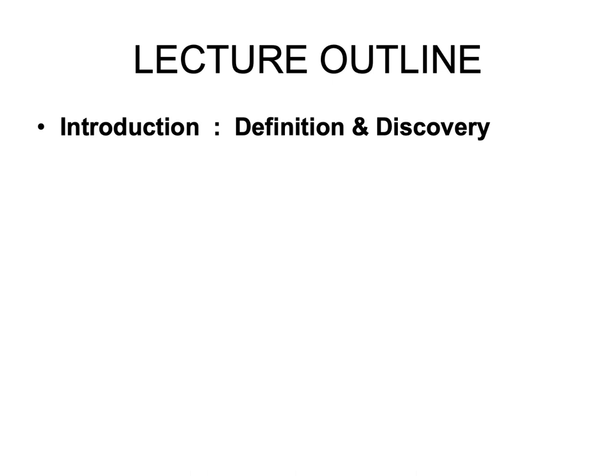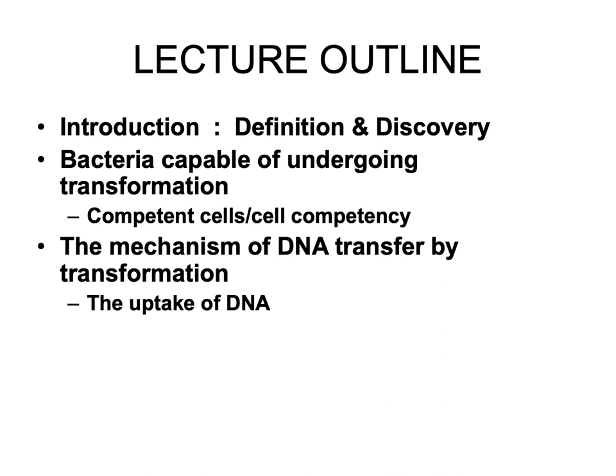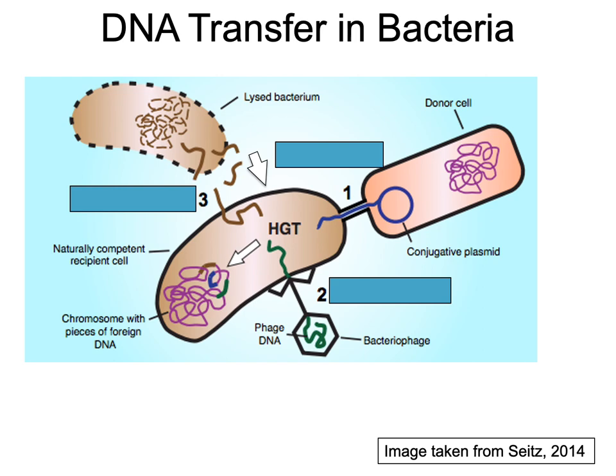This lecture will be divided into five subtopics. The first one is introduction and the elegant experiment which led to the discovery of transformation process in bacteria. Next, we will learn about the concept of competency, since not all bacteria can undergo natural transformation. We will then look at the mechanism of DNA transfer, focusing on how DNA is taken up from outside the cell. For the fourth subtopic, we will see how cell competency can be induced in the lab. The process is also called artificial transformation, and the last one is transfection.